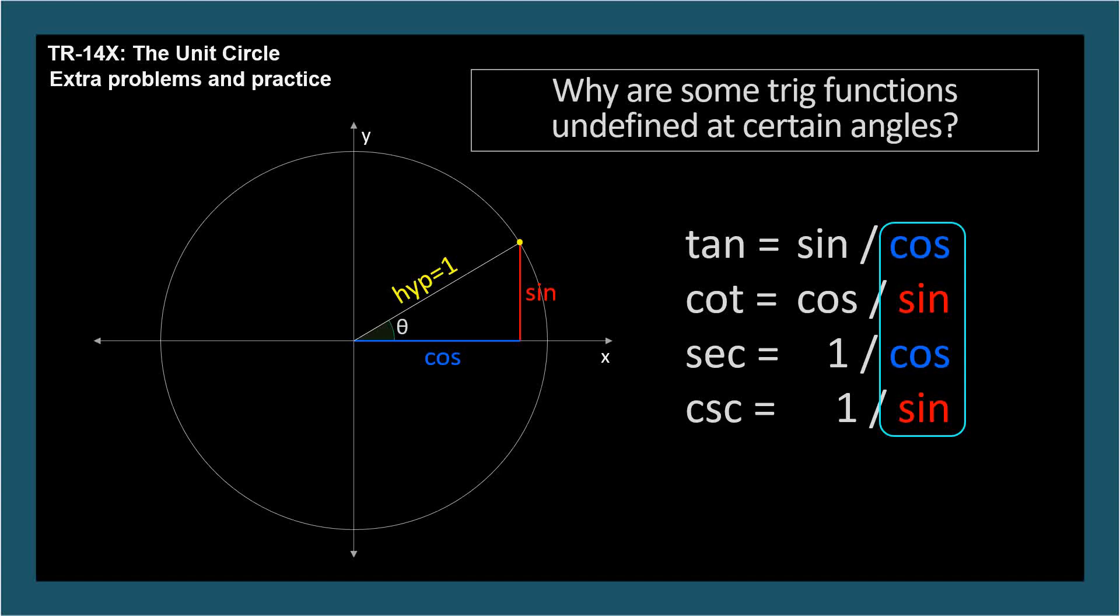Tangent and secant are undefined at angles where the cosine is 0. The cosine is the x coordinate, which is 0 at pi over 2, 3 pi over 2, and coterminal angles at the top and bottom of the unit circle.